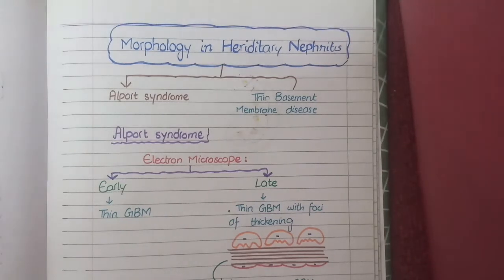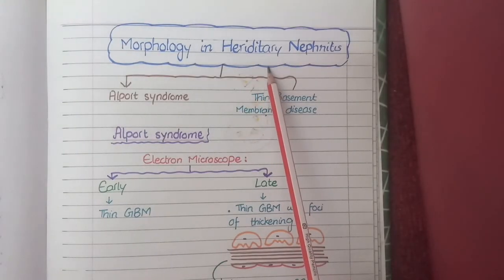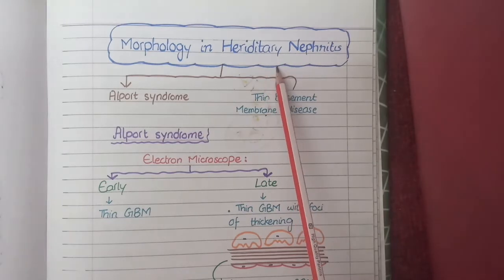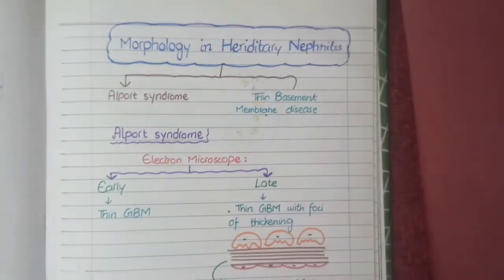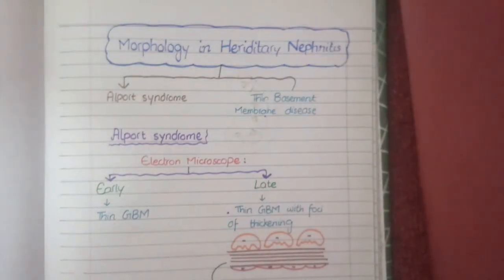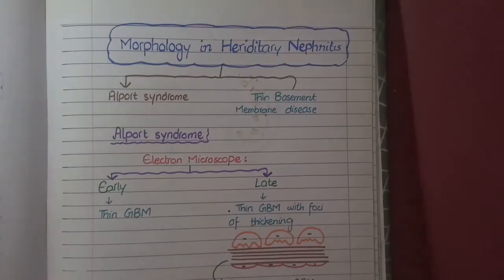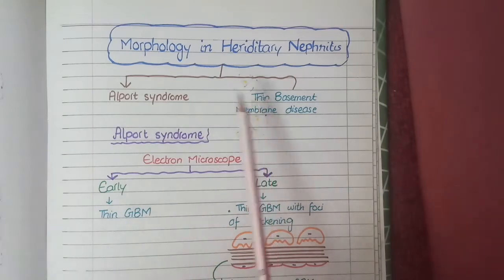In this video we will study the morphology in cases of hereditary nephritis. Hereditary nephritis is an inherited disease in which there are mutations in the structure of proteins that form the glomerular basement membrane. This alteration in the structure of the glomerular basement membrane results in a thin glomerular basement membrane that is not functionally fit. In the category of hereditary nephritis there are two similar diseases: Alport syndrome and thin basement membrane disease.